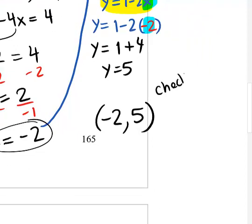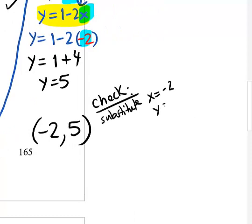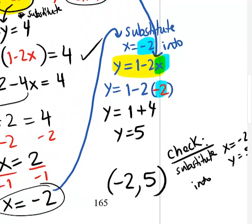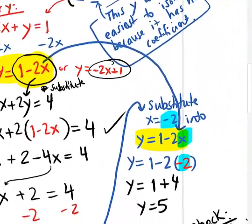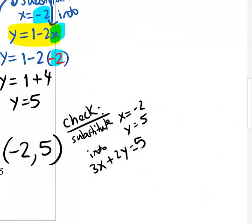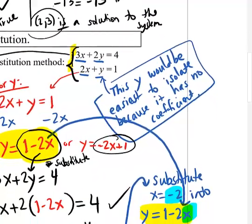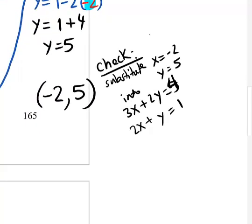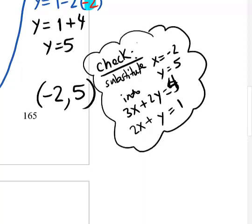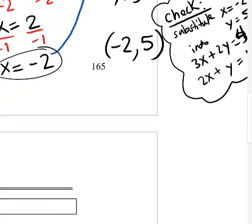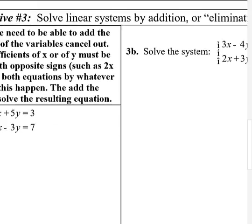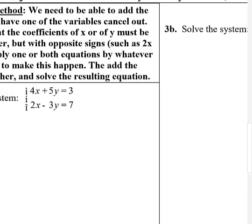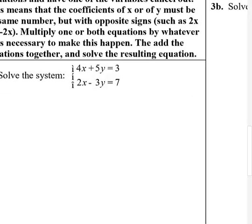You can verify the solution by substituting x equals negative 2 and y equals 5 into both original equations, similar to what we did in objective 1. I would definitely do that on an exam, just to make sure you did everything right. Sometimes you miss a negative sign in one place and everything gets screwed up, and you'd lose points even though you knew the process.